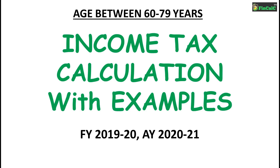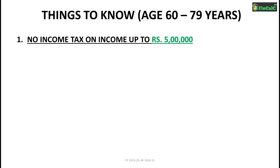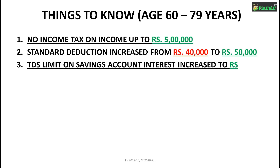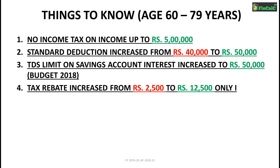There were a few changes made in Budget 2019: no income tax if income is up to Rs 5 lakhs; increase in standard deduction from Rs 40,000 to Rs 50,000; increase in Section 80TTB limit from Rs 10,000 to Rs 50,000, which was made in Budget 2018; and tax rebate increased from Rs 2,500 to Rs 12,500, only if income is below Rs 5 lakhs.